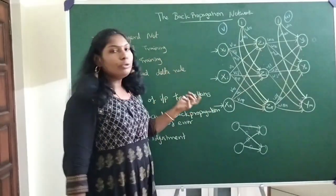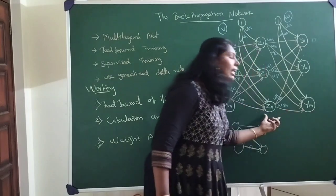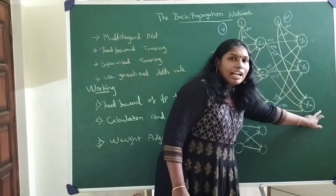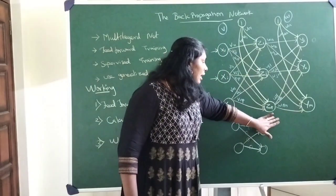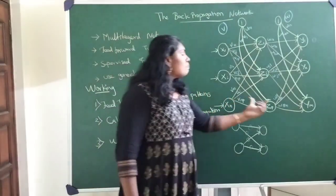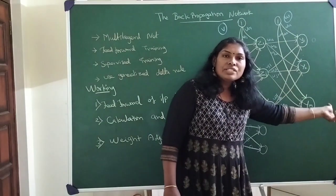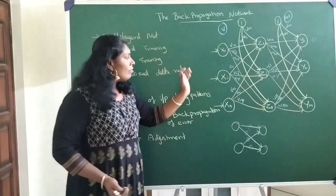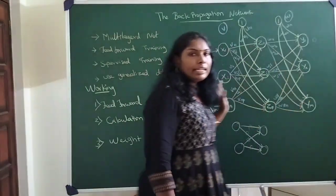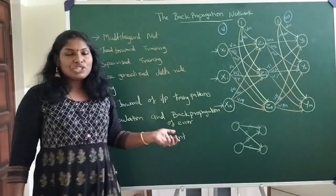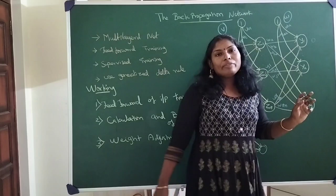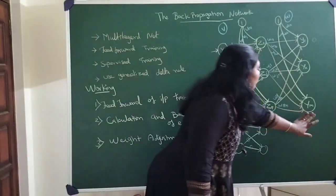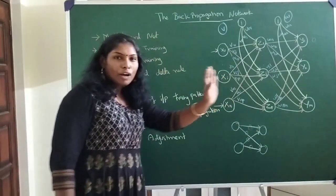The backpropagation network follows a generalized delta rule to minimize the error. The error value is then propagated back — that is why we call it a backpropagation network. Feed-forward of input occurs first, and once we calculate an error value, we backpropagate it from the output layer to the hidden layer, and from the hidden layer back toward the input layer. We calculate the mismatch between the outputs, and based on the mismatch, we adjust the weights. The backpropagation network works by a feed-forward of input to the target pattern, followed by error backpropagation and weight adjustment.